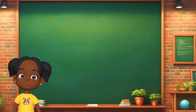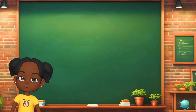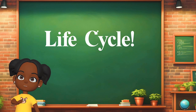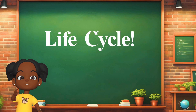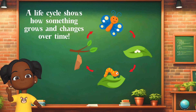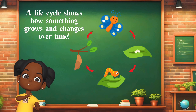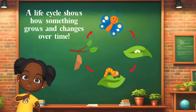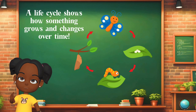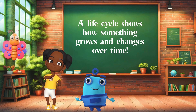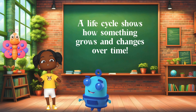Did you know that Cappy wasn't always a butterfly? She used to be a little bitty egg before turning into a beautiful butterfly. That's called a life cycle. A life cycle is like a big circle that shows how something grows and changes over time. What's a life cycle, Zylo? A life cycle shows how something grows and changes over time. Good job, Zylo.